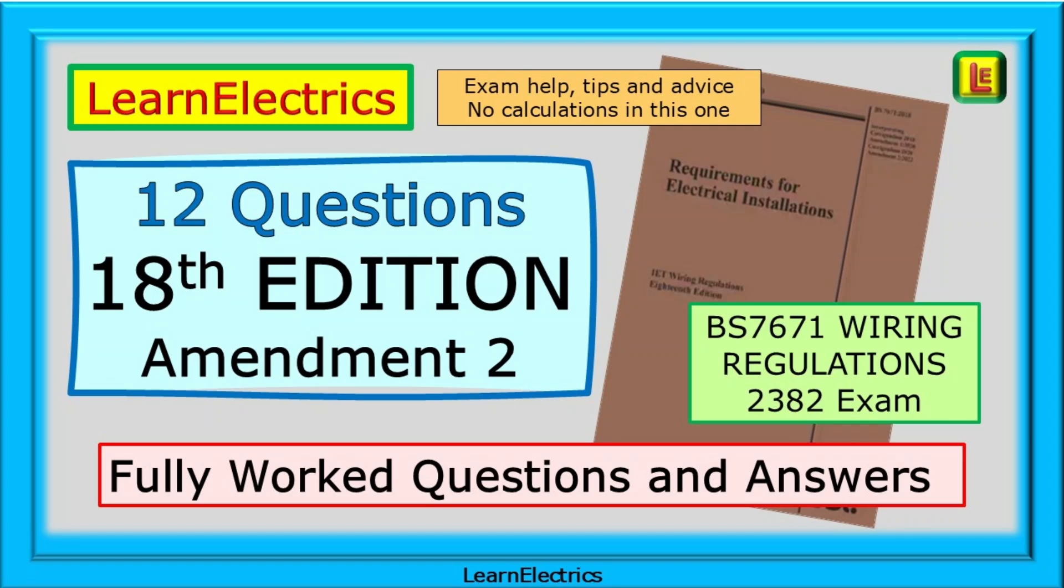We have here a selection of exam questions for the BS 7671 Wiring Regulations exam, 18th edition, sometimes called the 2382 exam. All the questions have fully worked answers along with tips to help you improve your exam scores and give you confidence.